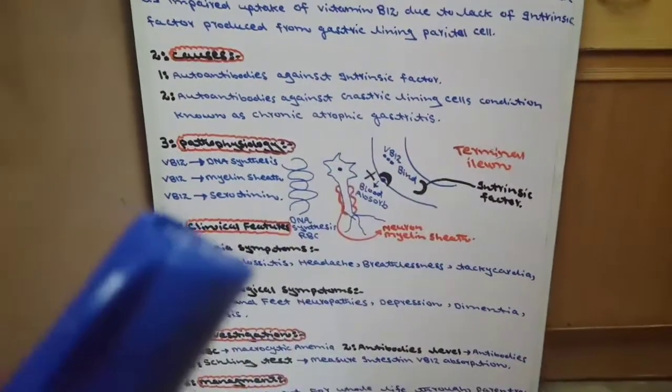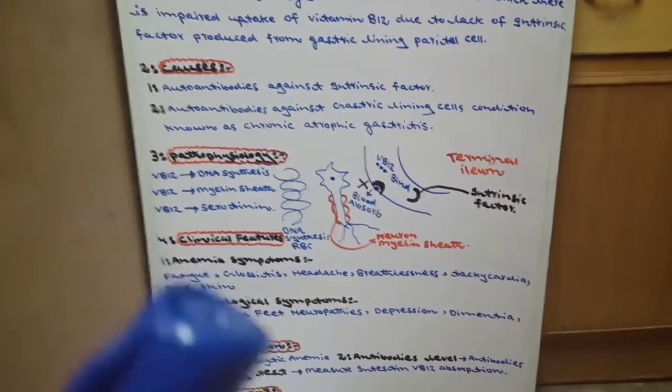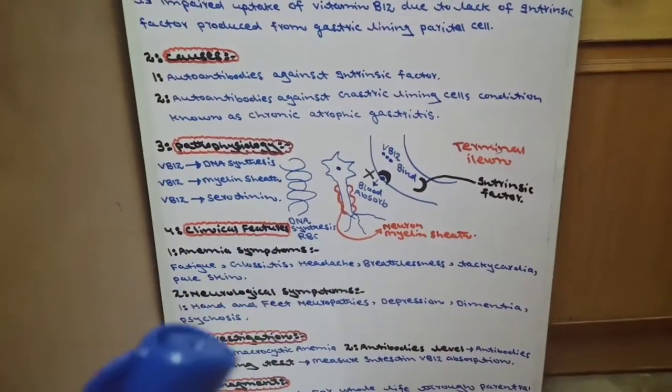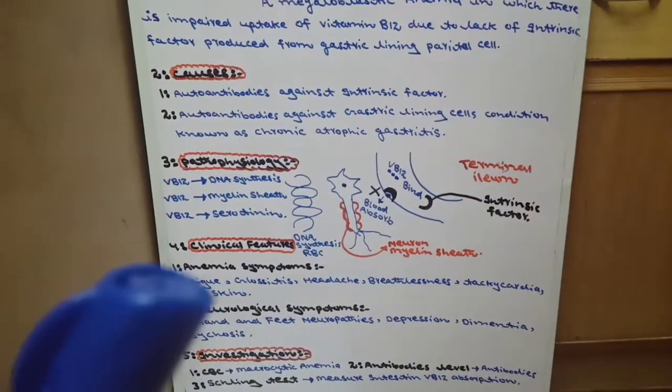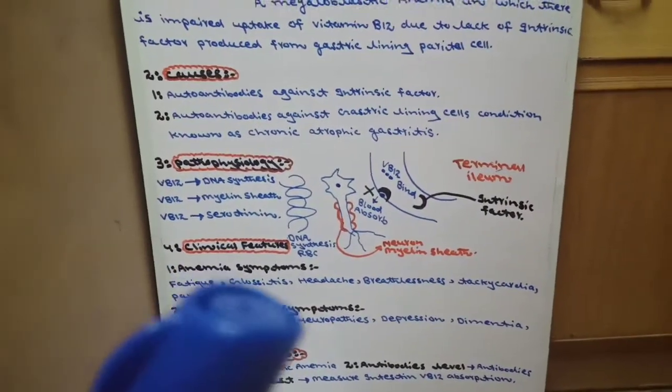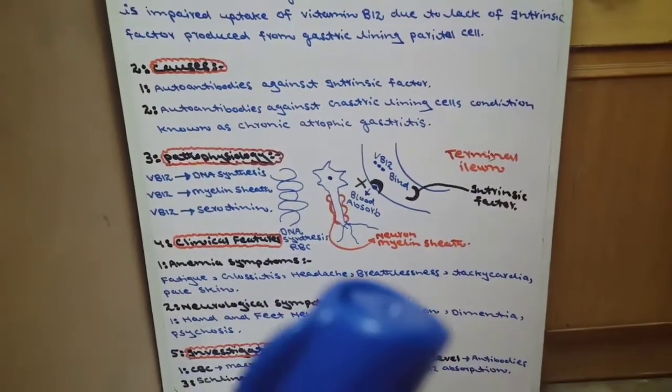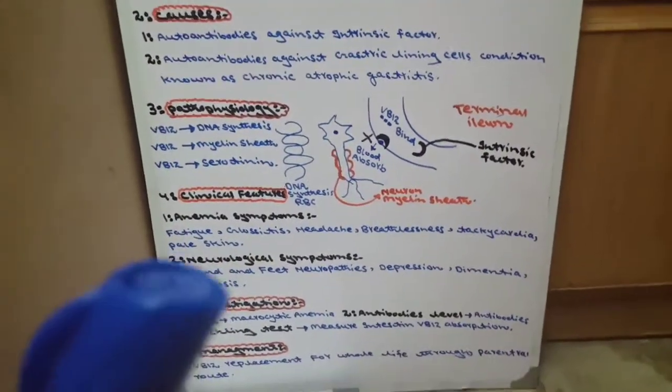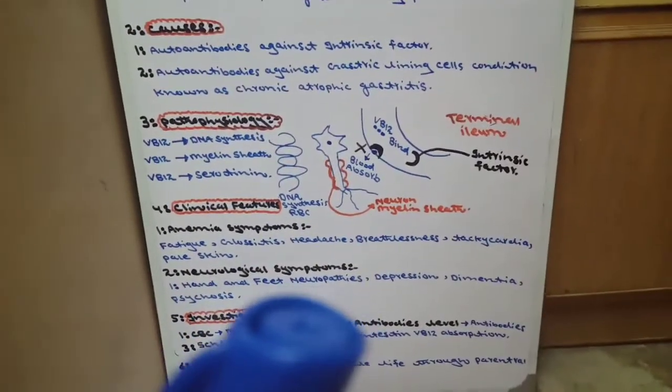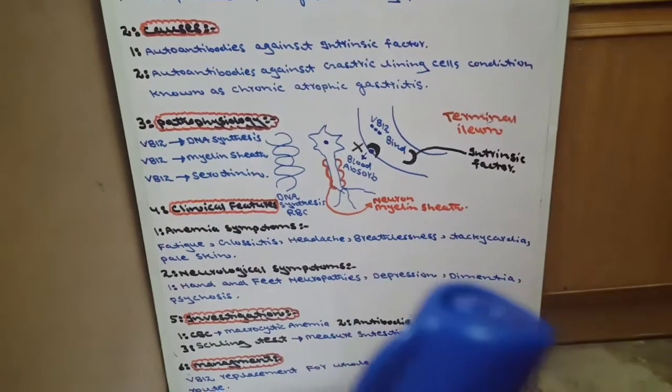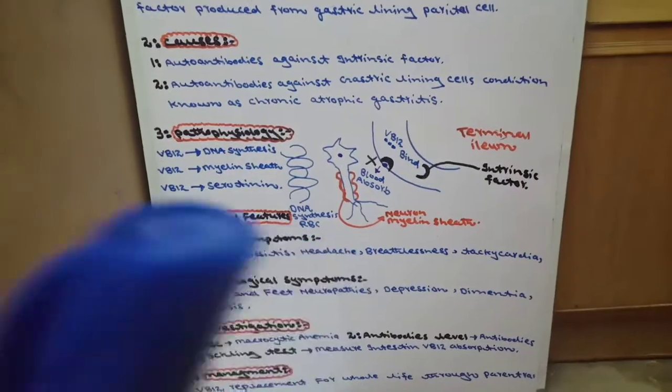These are the clinical features. Clinical features are two types: anemia symptoms and neurological symptoms. Anemia symptoms include patient fatigue, glossitis, tongue inflammation, headache, breathlessness, tachycardia, and pale skin. Neurological symptoms include hand and feet neuropathies, depression, dementia, and psychosis. These are the clinical features.